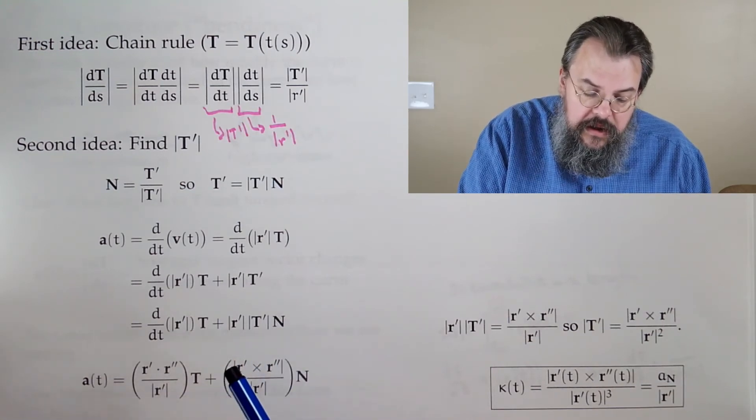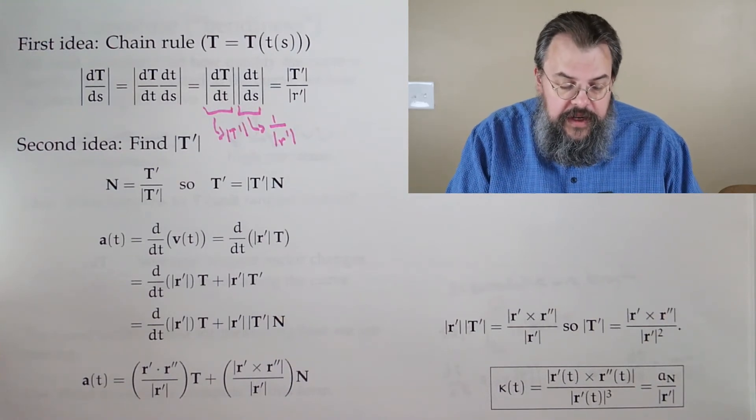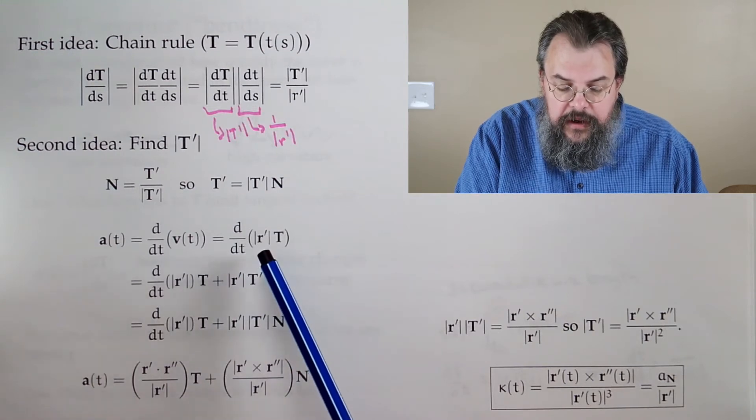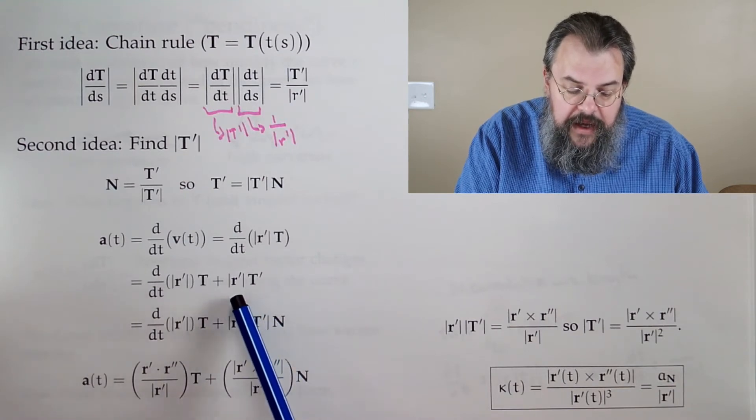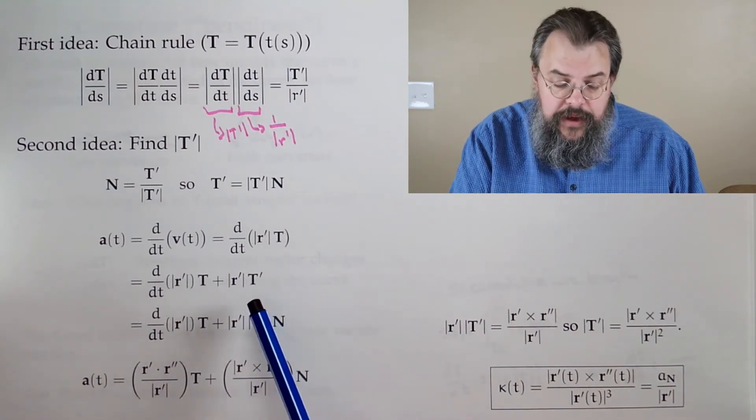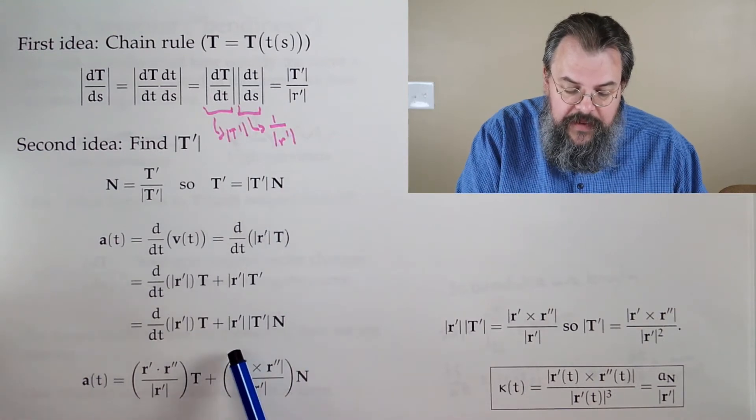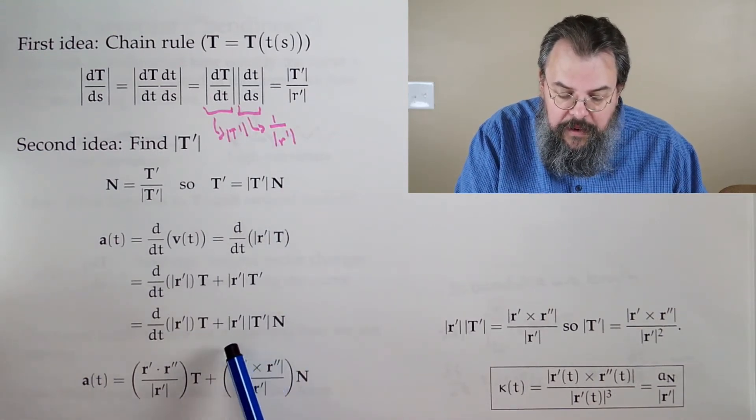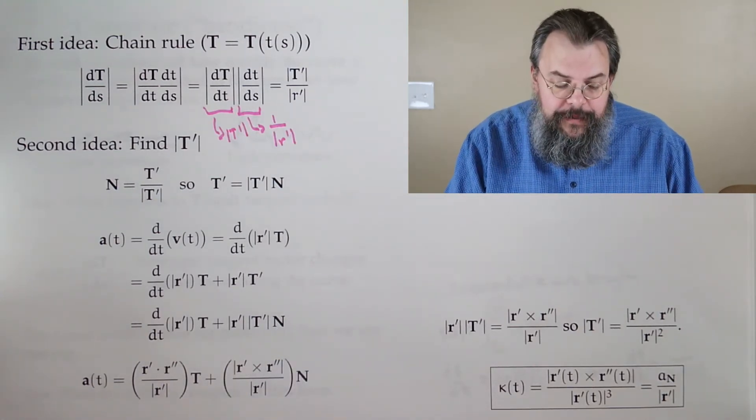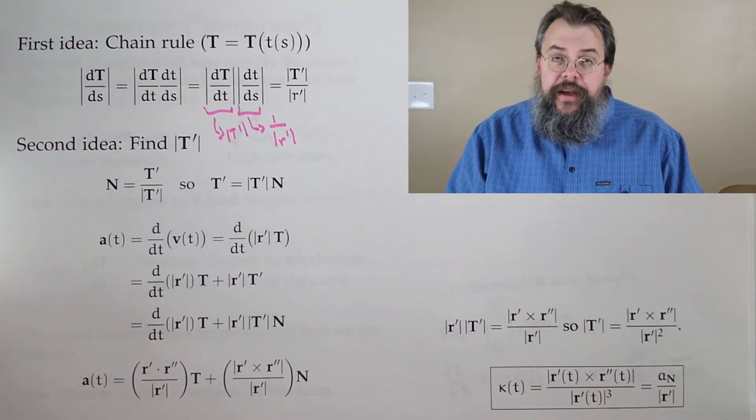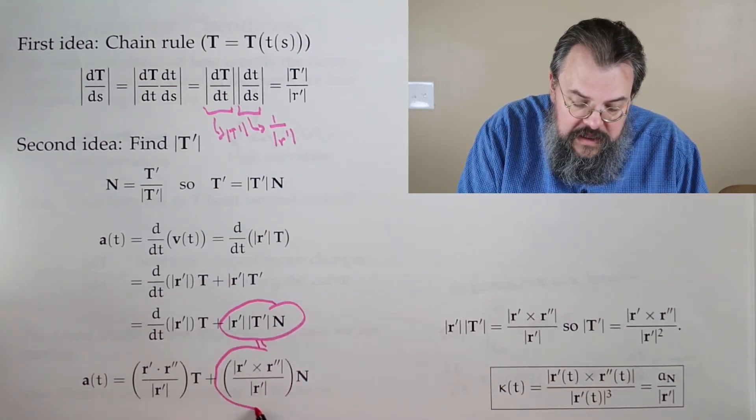We run through our acceleration computation and see if you run through the decomposition of acceleration, derivative of velocity, you have your two pieces. You have this magnitude of r' times magnitude of T' times N. But we also have another formula, namely this part right here has to match this part right there.